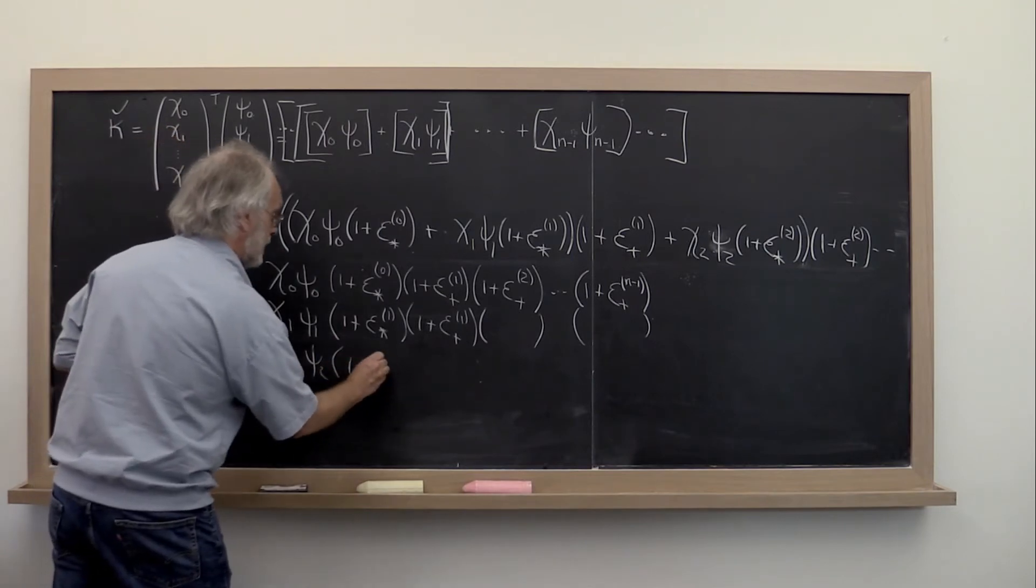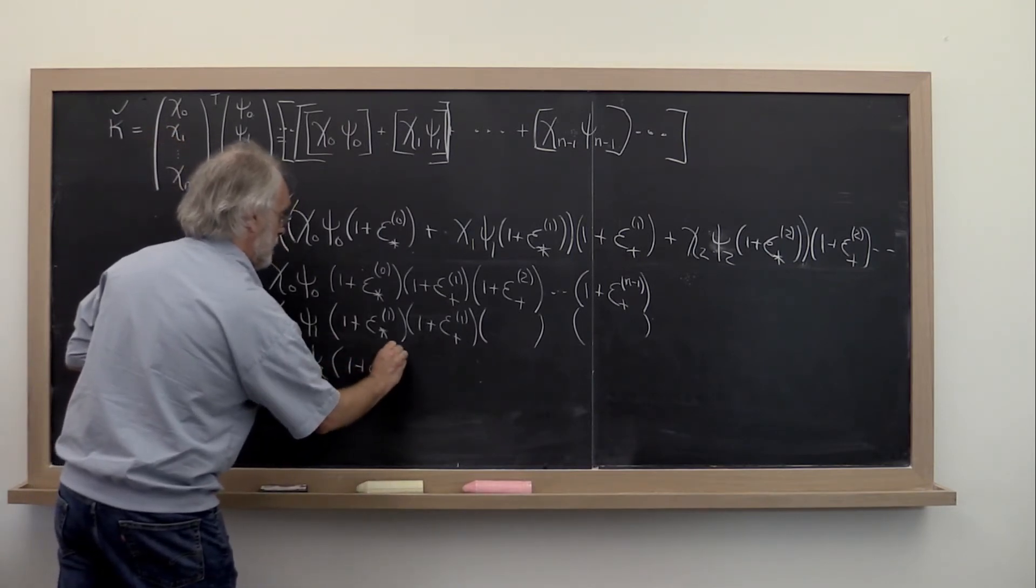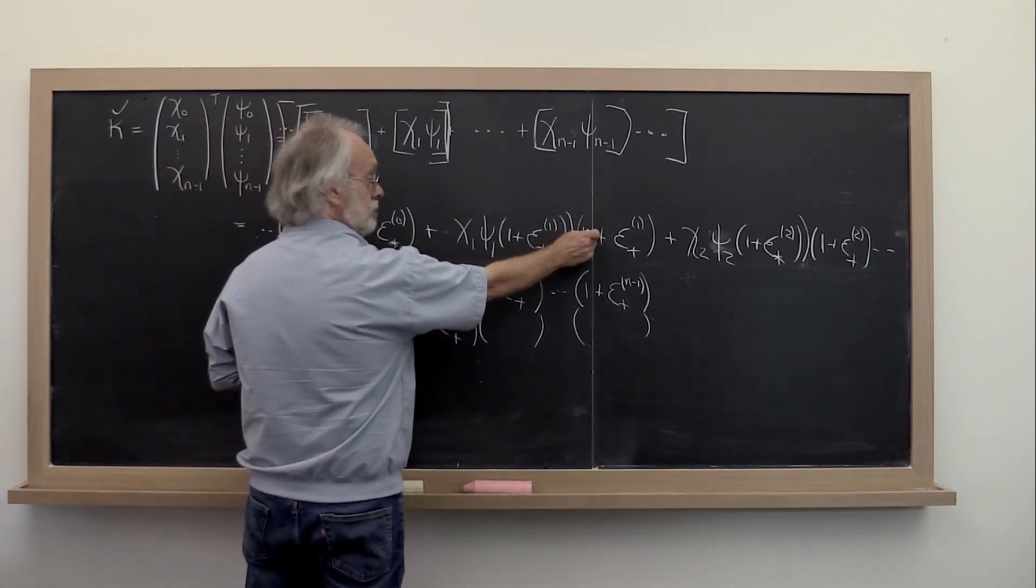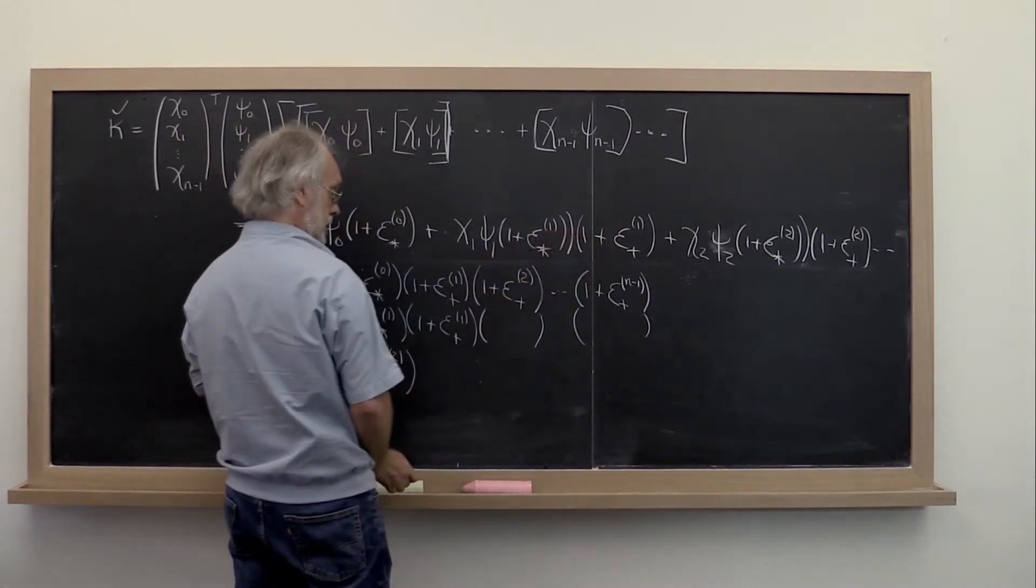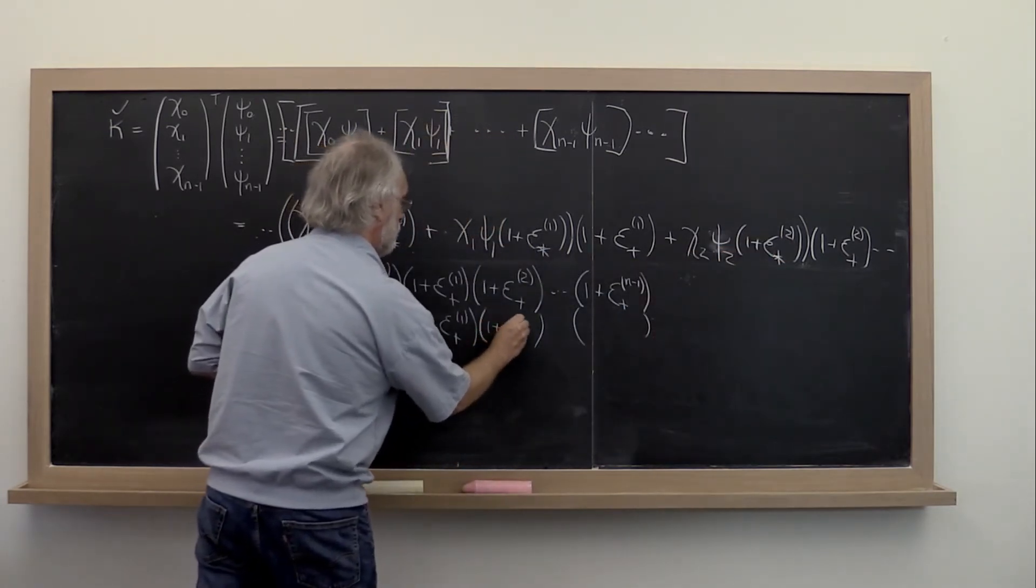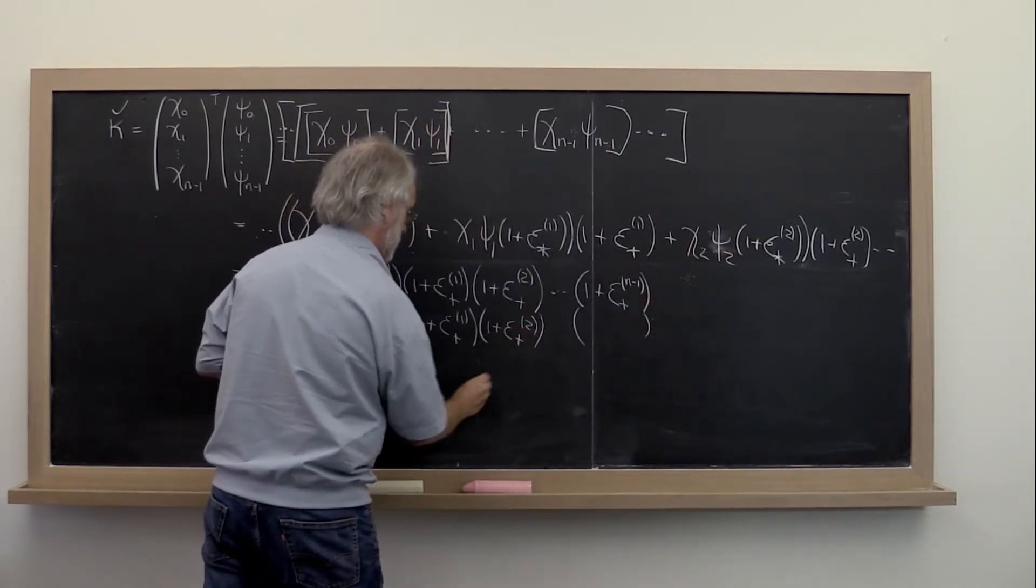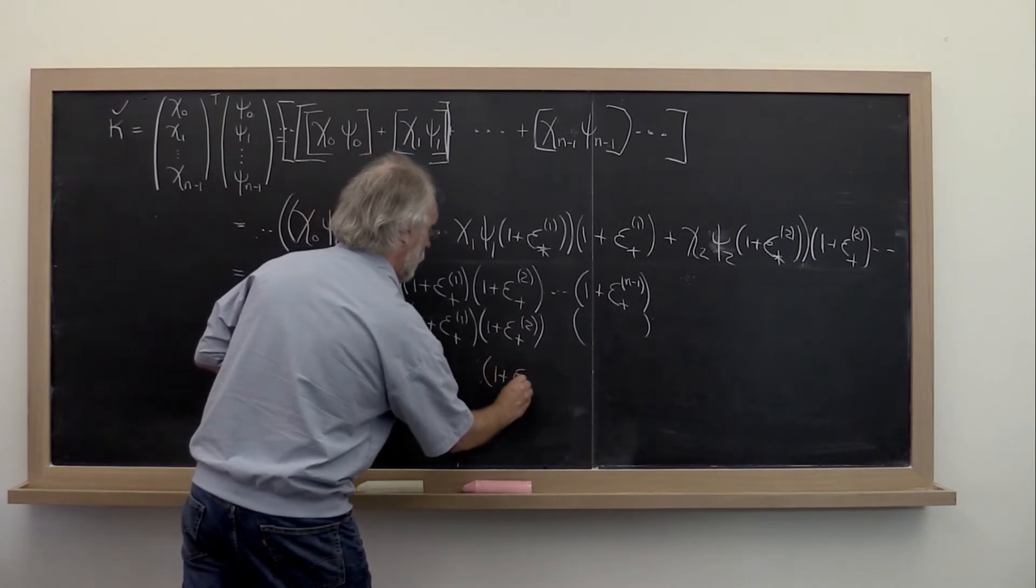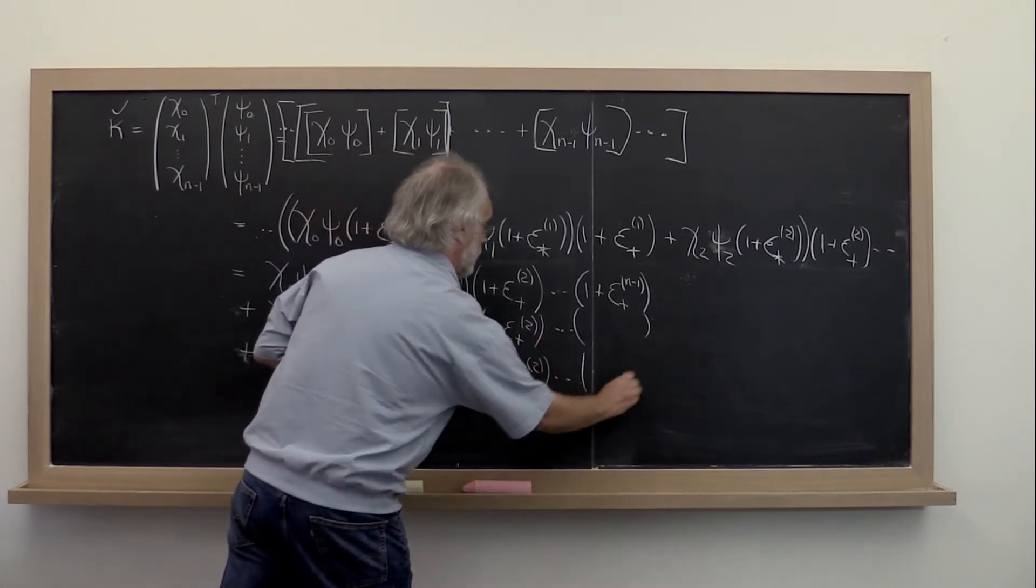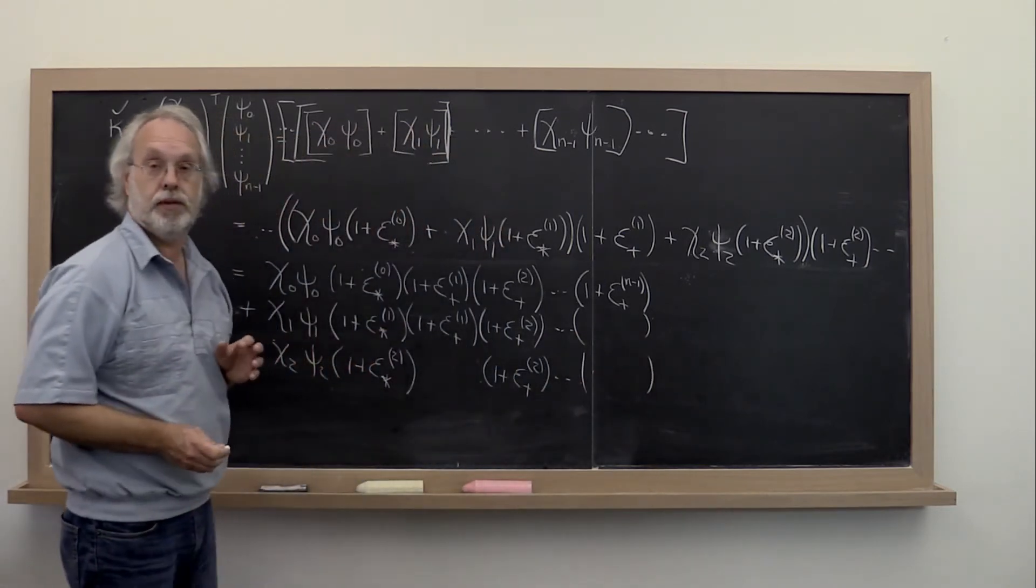You get 1 plus epsilon star 2, but that one is hit only by the rest of them. So we have 1 plus epsilon plus 2 here. Just to make this clear, we get 1 plus epsilon plus 2 here, and so forth.